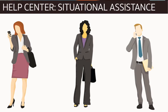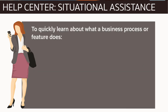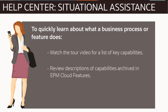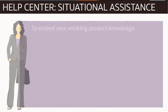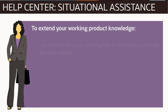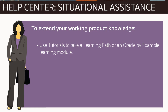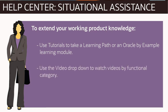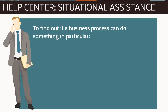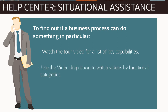Now let's see how the Help Center can assist in certain situations. To quickly learn what a business process or feature does, watch its tour video for a list of key capabilities, review the description of all its capabilities, archived and EPM Cloud features, or review the initial chapters of the documentation. To extend your working product knowledge and get more proficient, use tutorials to take a learning path or an Oracle by Example learning module. Use the video dropdown to identify and watch all videos by functional category, or search the documentation and read the related help topics. To find out if a business process can do something in particular, watch its tour video for a list of key capabilities, use the video dropdown to identify and watch videos by functional categories, or search cloud features and the documentation.